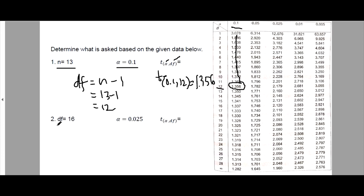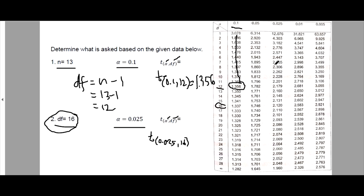Example 2: We are given degrees of freedom equals 16 and alpha equals 0.025. Since both are already given, we can directly use the table. We look up T sub 0.025, 16 — no need to subtract 1 since it's already the degrees of freedom. Locating 0.025 and df equals 16 on the table, the T-value is 2.120.